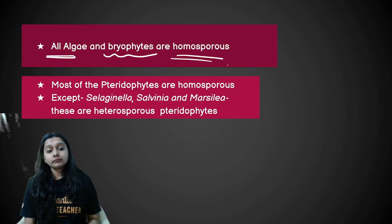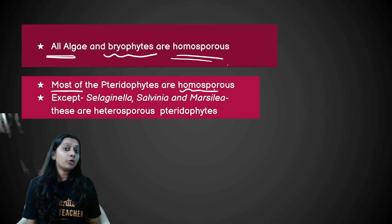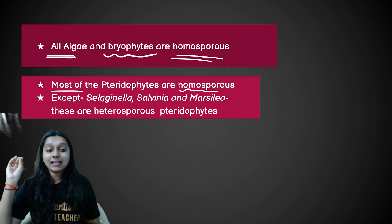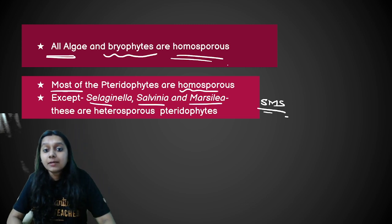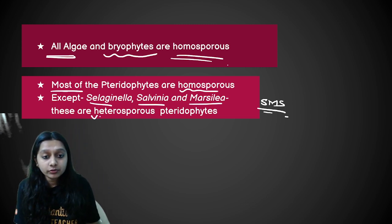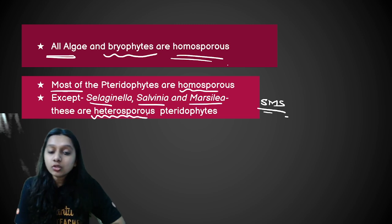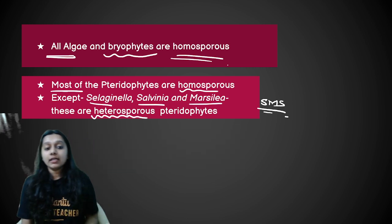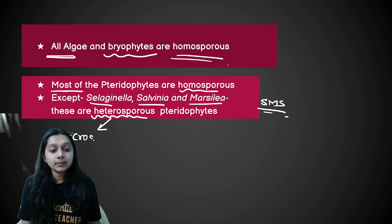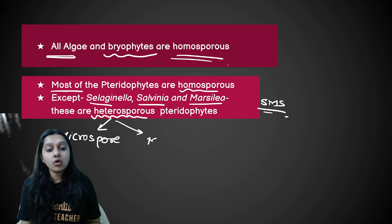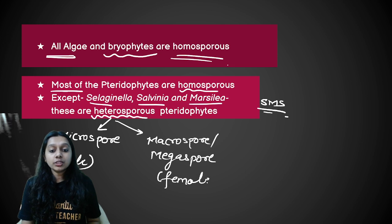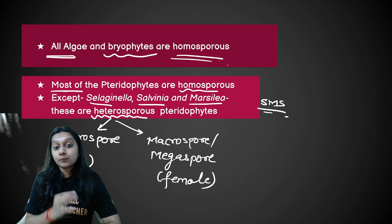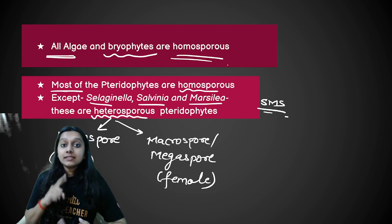An important classification: all bryophytes are homosporous, and the majority of Pteridophytes are also homosporous — they produce only one type of spore. However, SMS — Selaginella, Salvinia, and Marsilia — are heterosporous. Heterosporous means two types of spores are produced: microspores (male) and megaspores (female).